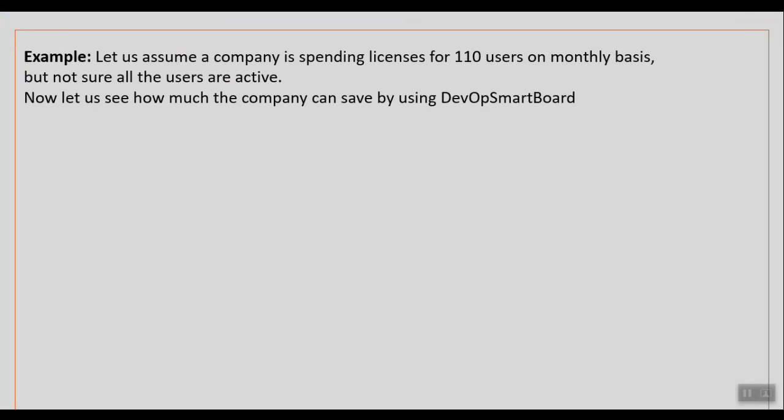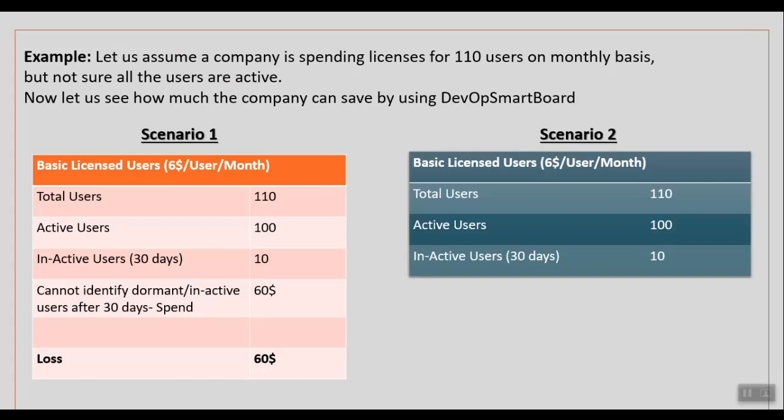Let me explain with an example. Assume a company is paying for licenses for 110 users monthly but isn't sure all users are active. The Basic license cost is $6 per user per month. Let's say there are 100 active users and 10 inactive users who have not accessed Azure DevOps in the last 30 days. Without a tool to identify them, the company is still spending $60 per month on those unused licenses.